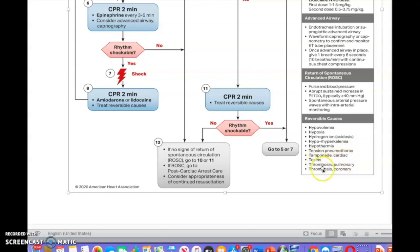Tamponade, toxins, thrombosis pulmonary, and thrombosis coronary. All these are the five H's and the five T's. It's very, very important to understand the five H's and the five T's and what are some interventions that you can do to correct the five H's and the five T's. That's very important.